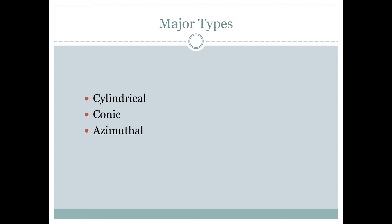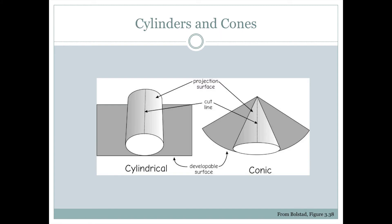We can talk about three major types of map projections. These types have to do with the kind of surface that the globe is projected onto and then potentially flattened out to become a flat surface for a Cartesian coordinate system. The easiest way to do this is just to start with a flat surface — that would be an example of an azimuthal map projection. But there are two other surfaces commonly used: a cylinder and a cone. We can project onto either and then flatten them out.